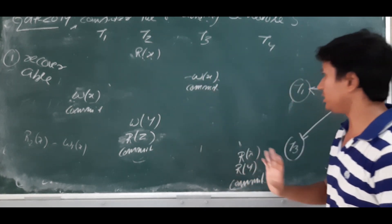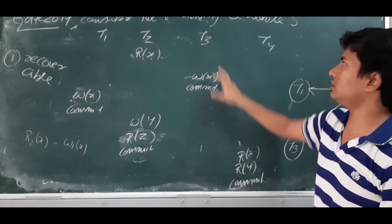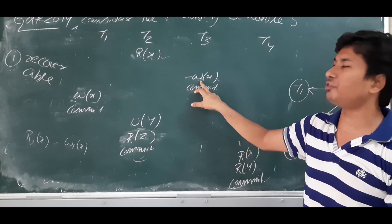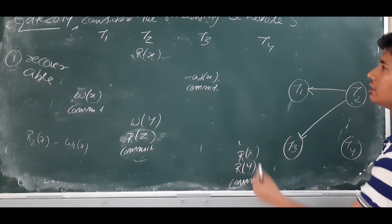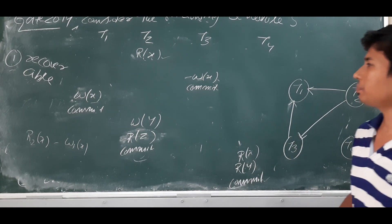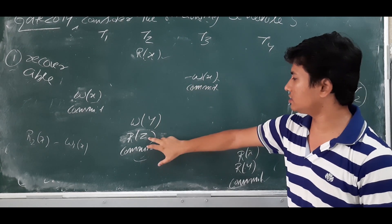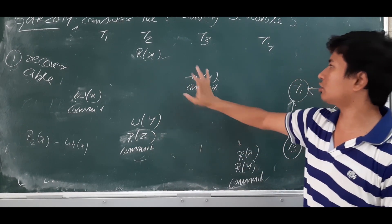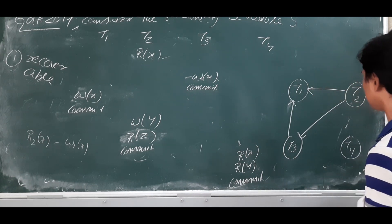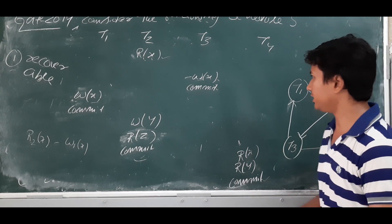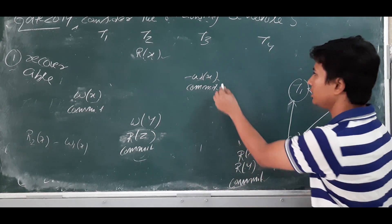Read-read is not a conflict, and operations on different data items do not conflict. Next, W(x) in T3: checking for write-write and write-read conflicts on the same data item x. W3(x) and W1(x) gives a conflict — edge from T3 to T1. Also, W3(x) and R4(x) is a write-read conflict — edge from T3 to T4. Operations on different data items x and y do not conflict, so we are done with this operation.